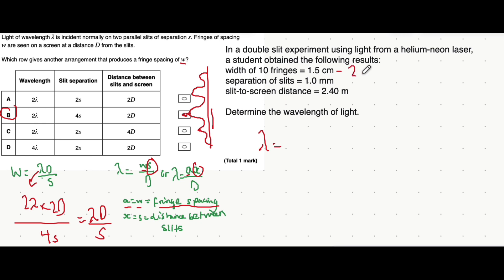1.5 divided by 10 is 0.15 cm. You then have to convert that into meters because you don't want to deal with centimeters in calculations. You do that by dividing by 100 or multiplying by 10 to the minus 2.